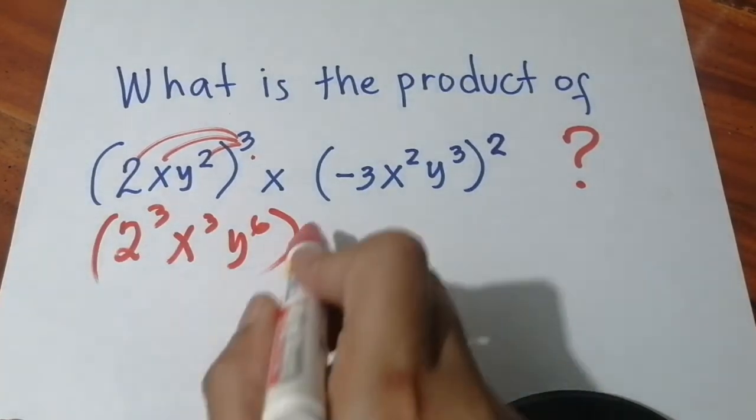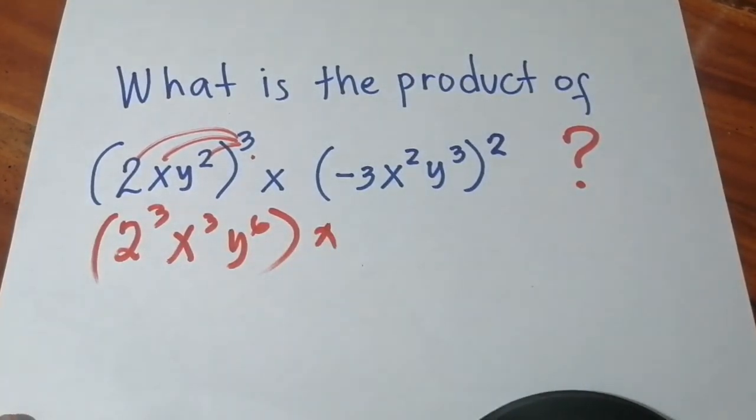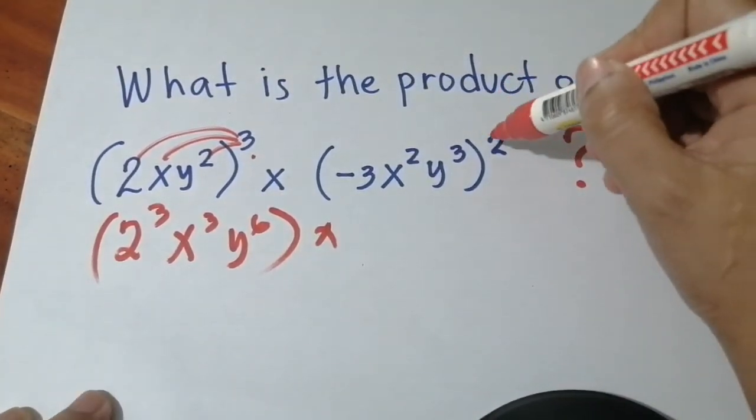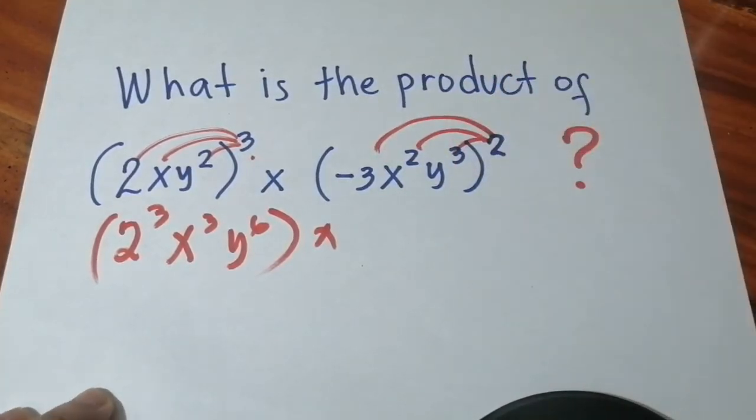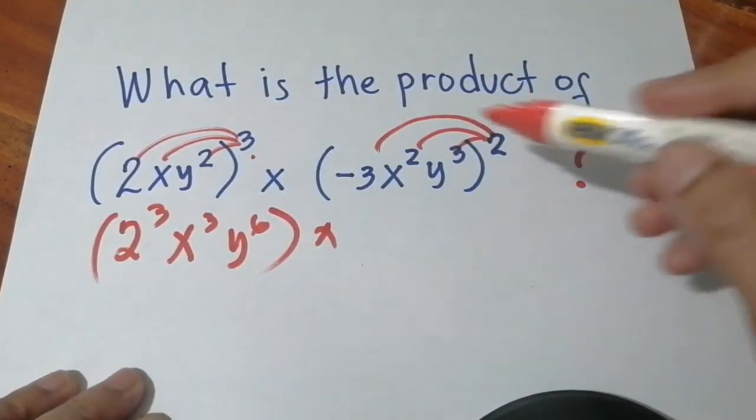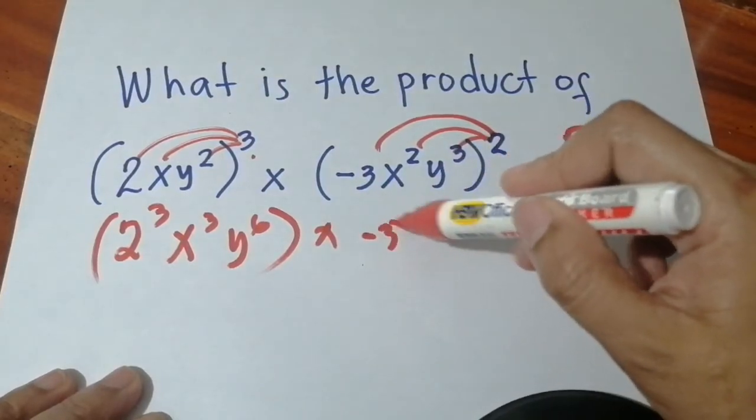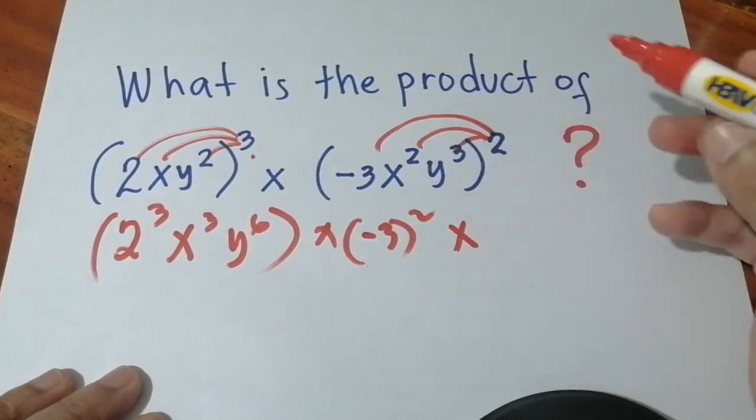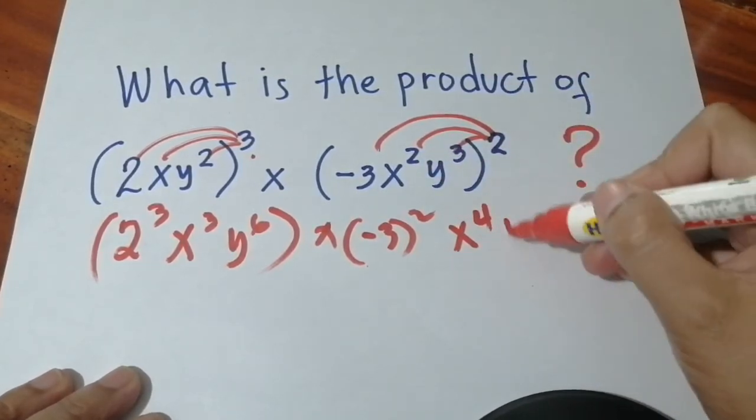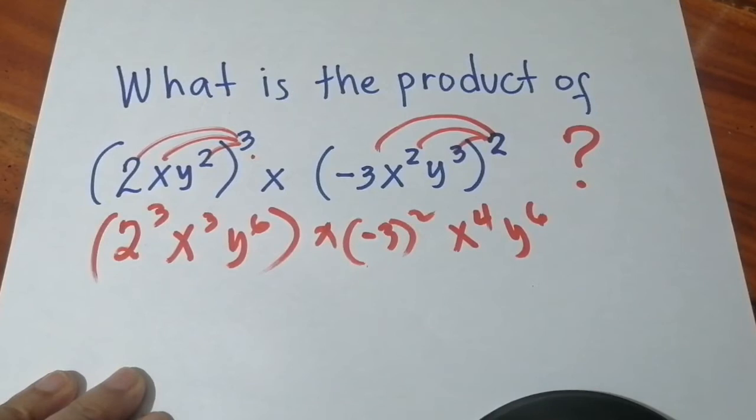And then after, same thing, do the same to the other side. Distribute this outside exponent to everything inside it. So distribute it and you'll have negative 3 raised to the second power, x raised to the fourth power, y raised to the sixth power.